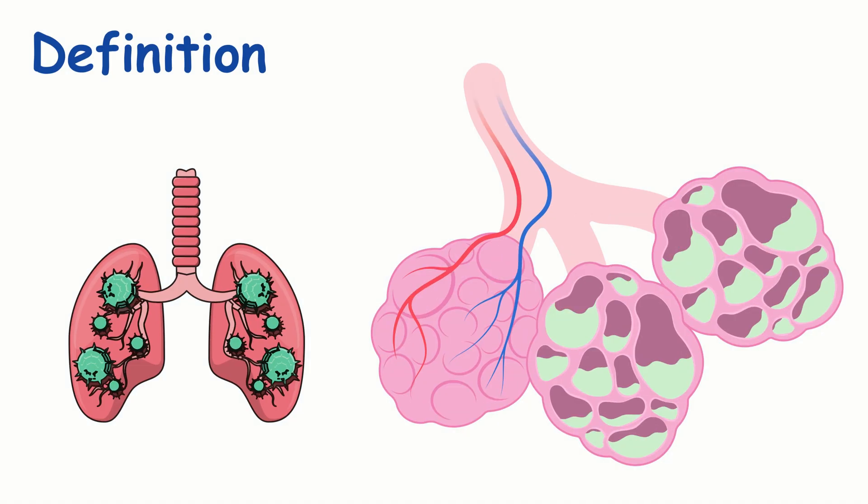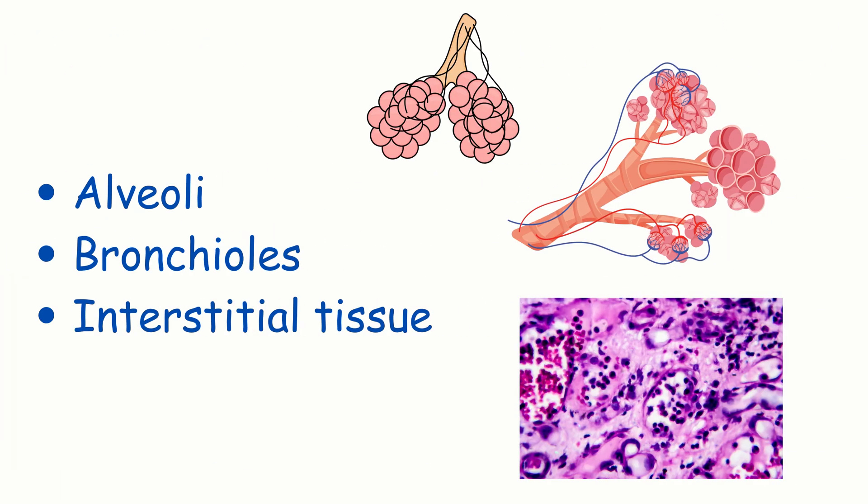Pneumonia is defined as an infection of the pulmonary parenchyma. This includes the alveoli, bronchioles, and interstitial tissue.